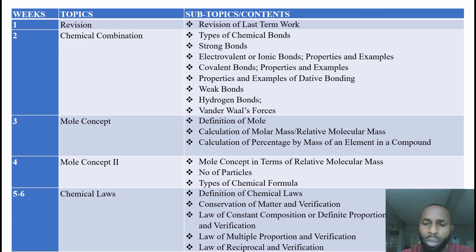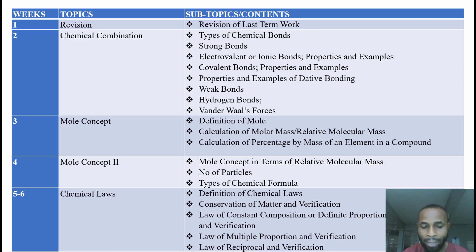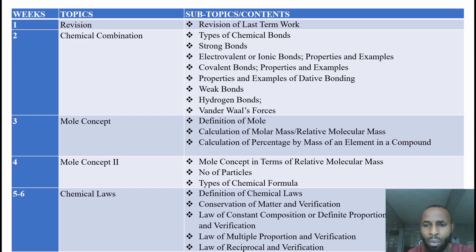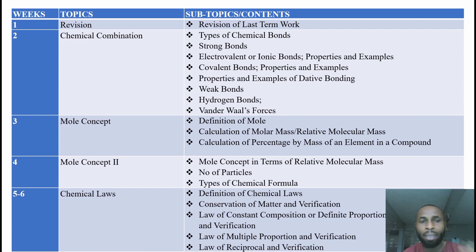We are starting with chemical combination. The reason I picked chemical combination first is because we just did naming of compounds and electron configuration last term, which was our first time, so the idea is still fresh. There is a connection between last term's work and this term's work. That is why when setting questions in CA and the main exam, we are going to refer back to the previous term.